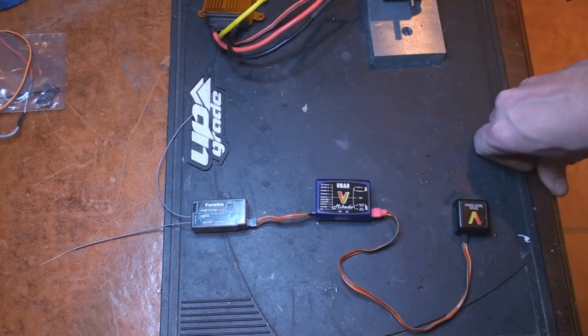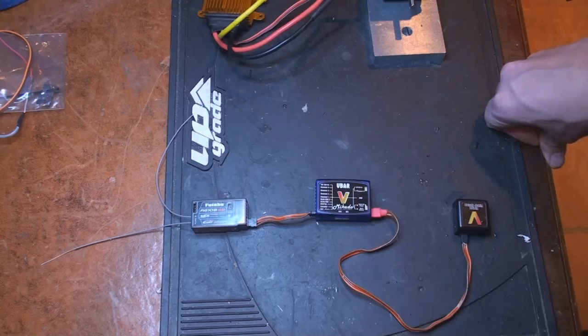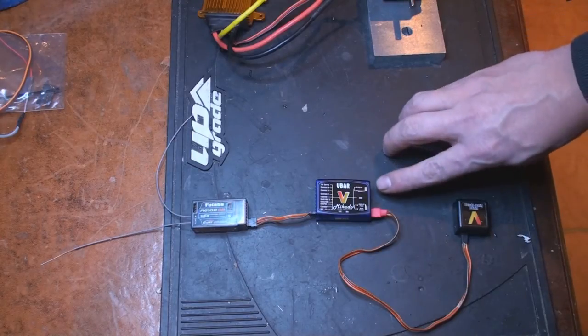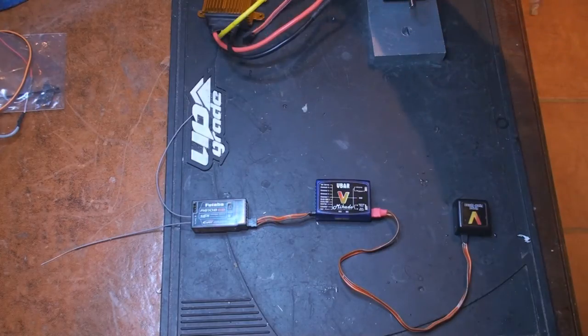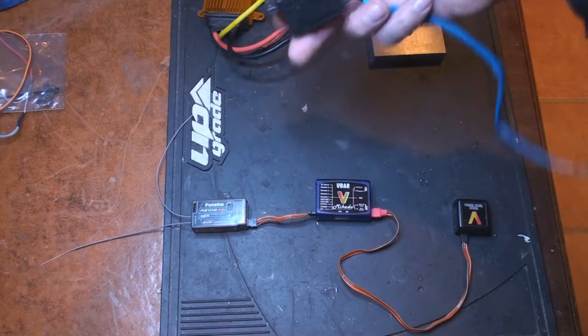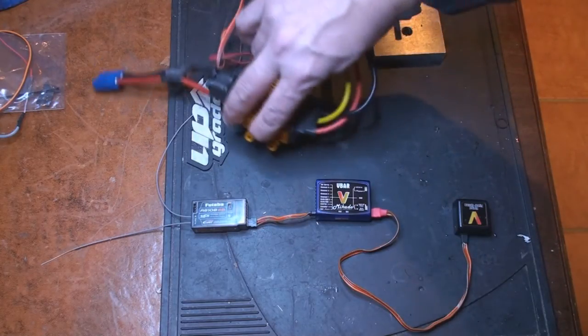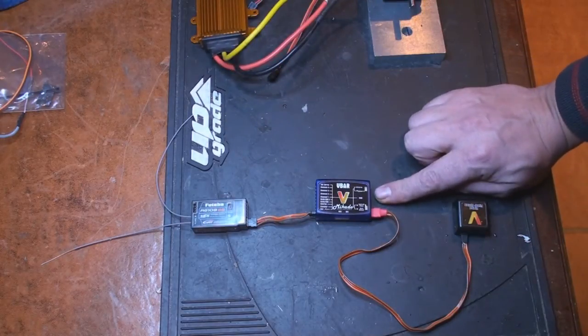When it comes to actually getting the servo or a speed controller to work, there are three different ports. Either you have this servo port on this side, which is good if you have a nitro where you have a regular servo. But if you're using a speed controller with a built-in BEC, you cannot put power into this port because it will damage the V-bar.